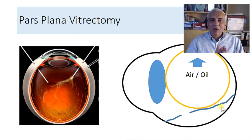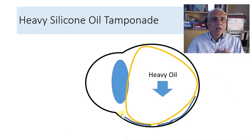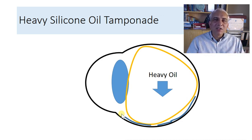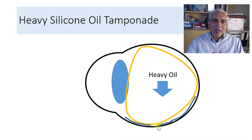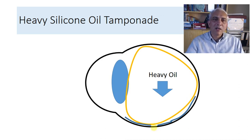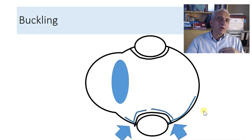For an inferior break, you need the retina bone dry — all SRF removed. If using air or gas, you can ask the patient to posture lying supine. However, if you use heavy silicone oil (Densiron), it behaves the same way as gas does for a superior break: heavy silicone oil pushes down onto the inferior break, seals it, pushes the retina against the choroid, and forces the subretinal fluid upward where it gets absorbed.